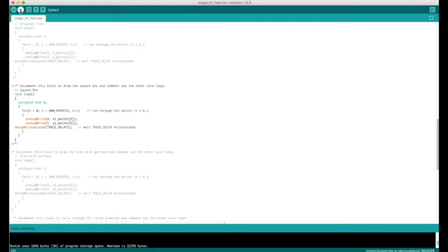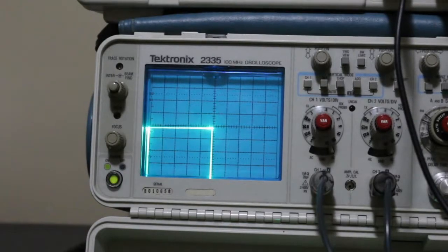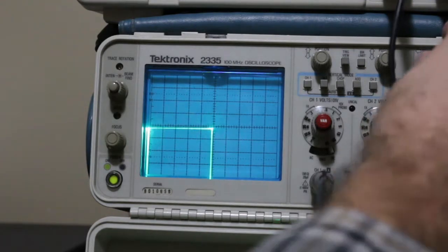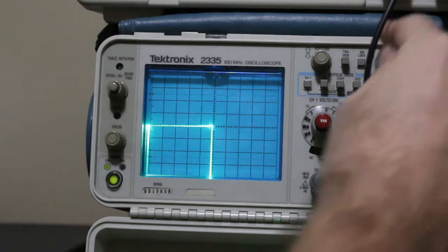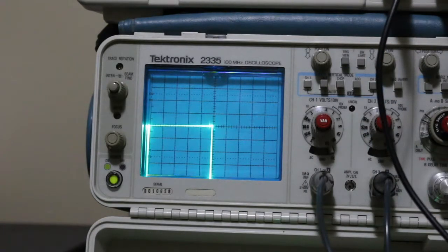Now I'm going to download this version of the code where it just draws a box instead of all the graphics. Because the box outlines the entire screen and it's hard to see, I'm going to scale it down and move it slightly so we can get a better idea.